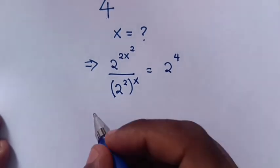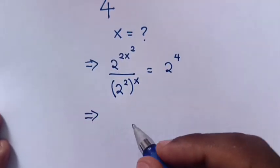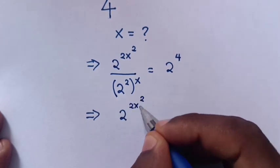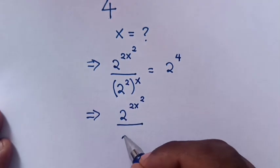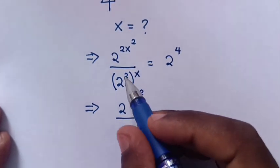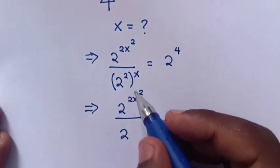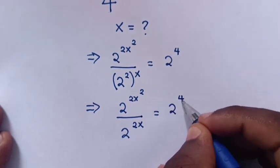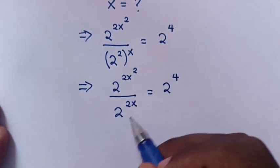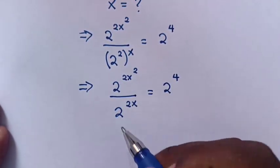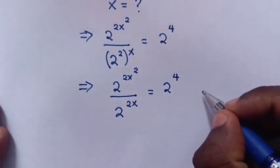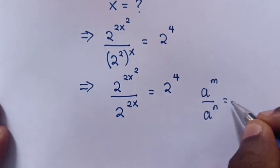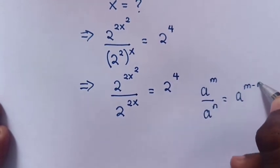From here, our equation becomes 2 power 2x squared over 2 power 2x, which is equal to 2 power 4. We apply the exponential division rule: a power m over a power n is equal to a power m minus n, since we have the same base.